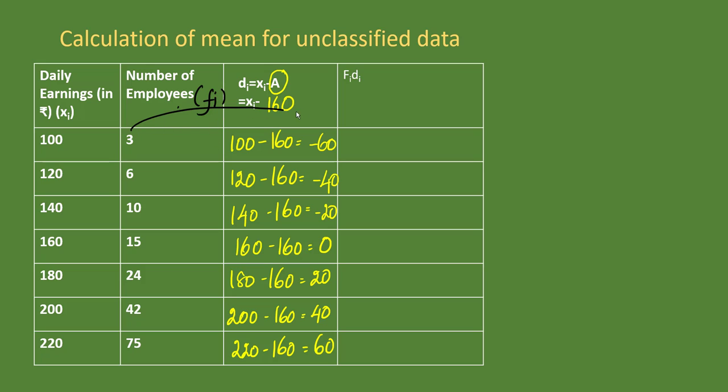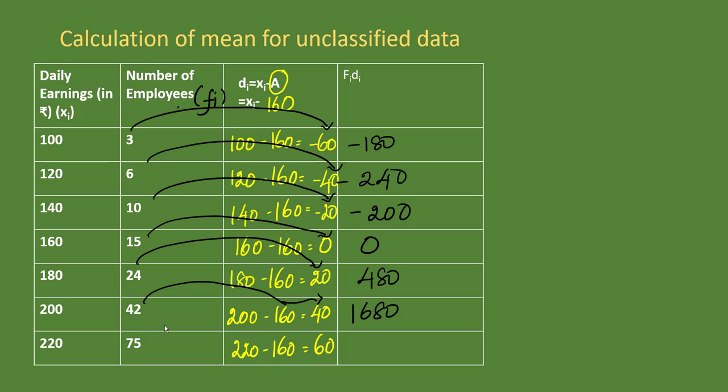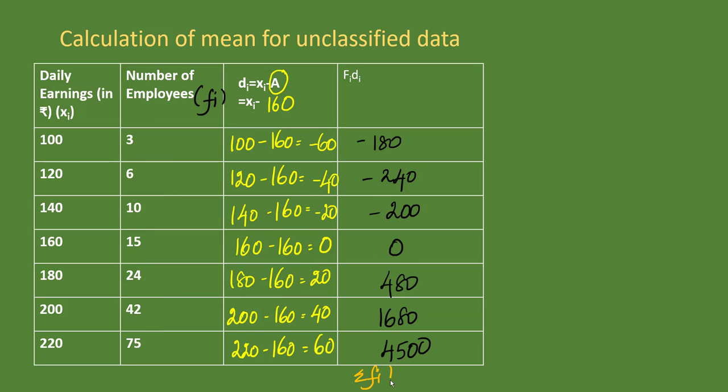The number of employees is the frequency. This time multiply the frequency into the deviation. 3 into -60 gives -180, 6 into -40 gives -240, 10 into -20 gives -200, 15 into 0 gives 0, 24 into 20 gives 480, 42 into 40 gives 1680, and 75 into 60 gives 4500. Summation of f_i d_i stands at 6040.